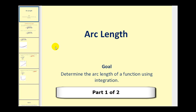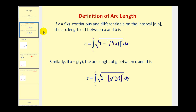Welcome to a presentation on arc length. If f of x is continuous and differentiable on the closed interval from a to b, then the arc length is equal to the definite integral from a to b of the square root of one plus f prime of x squared, integrated with respect to x. One thing we have to be careful about when we apply this formula is that this is the derivative of the function — a common error is to substitute the original function, which would not be correct. We can find the arc length in a similar way if we have the function in the form x equals g of y, and our limits of integration will be with respect to y.